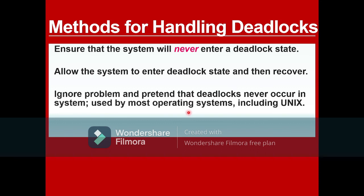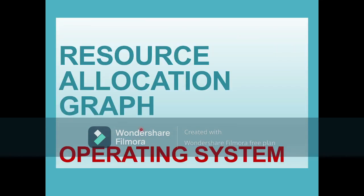The last method is to ignore the problem — if a deadlock has occurred, ignore it and pretend that deadlock never occurred in the system. This approach is used by most operating systems, including Unix. This is mostly used: when deadlock occurs, you pretend and ignore that it has occurred. So this was all about resource allocation graph under operating systems. Thank you.